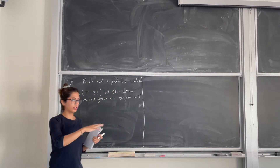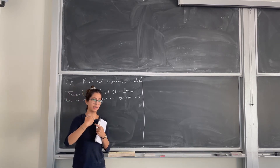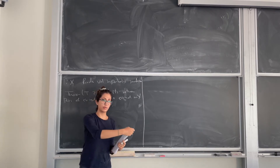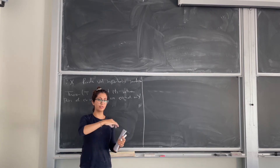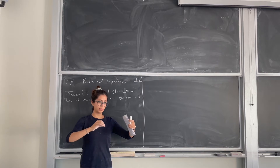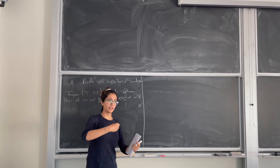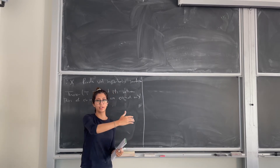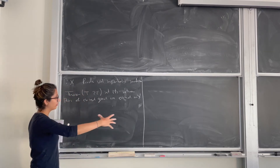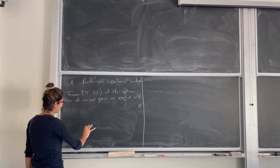What do I mean? By equidistribution, I mean if we consider closed geodesics up to length t and we look at all the intersection points between them, put a delta measure on those points, make it a probability measure, then this is converging to the uniform measure on x as t goes to infinity.